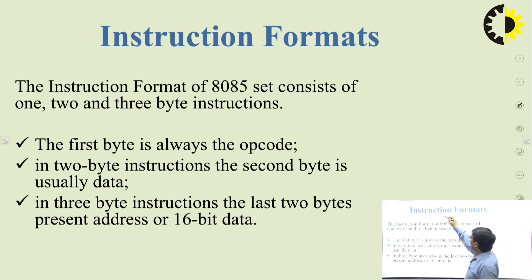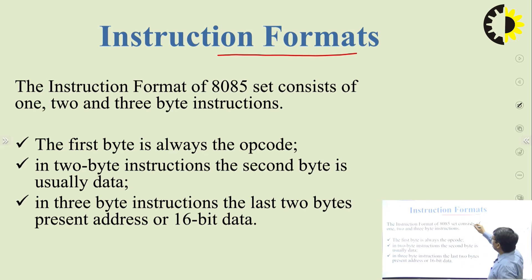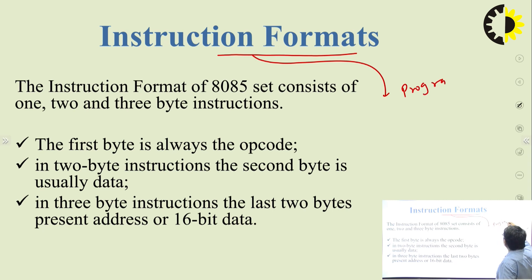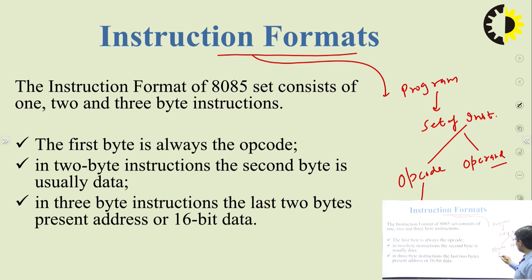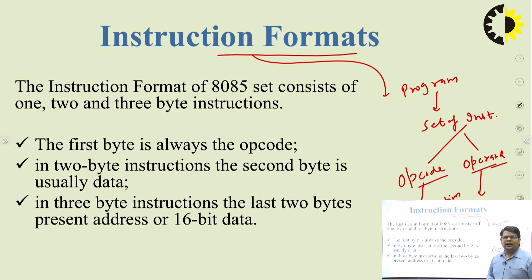First of all, what are instruction formats? In the microprocessor, we work with programs, and a program is nothing but a set of instructions. Each instruction has two parts: one is opcode and second is operand. Every microprocessor will have an opcode — that is, the operation code indicating what task is to be performed — and then we have the operand, which is the data over which the operation is to be performed. For specifying the opcode and operands in the instruction, we have to follow particular templates.